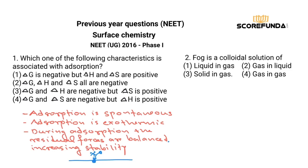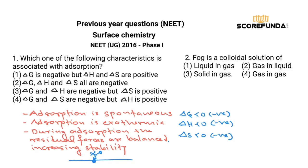Using these three facts: adsorption is spontaneous so ΔG < 0 (negative); adsorption is exothermic so ΔH < 0 (negative); and during adsorption the residual forces are balanced, meaning entropy decreases, so ΔS < 0 (negative). Therefore, for adsorption, ΔG, ΔH, and ΔS all must be negative. This corresponds to option number 2.